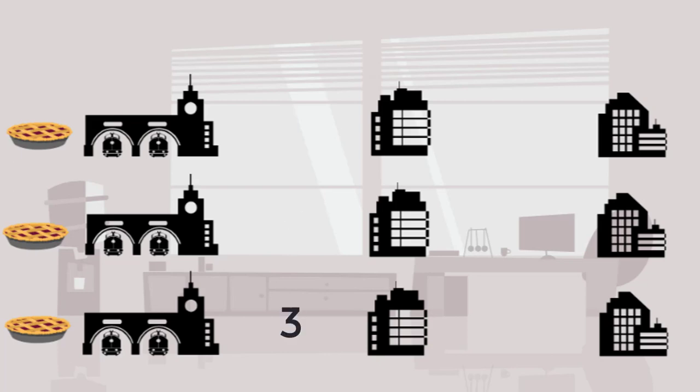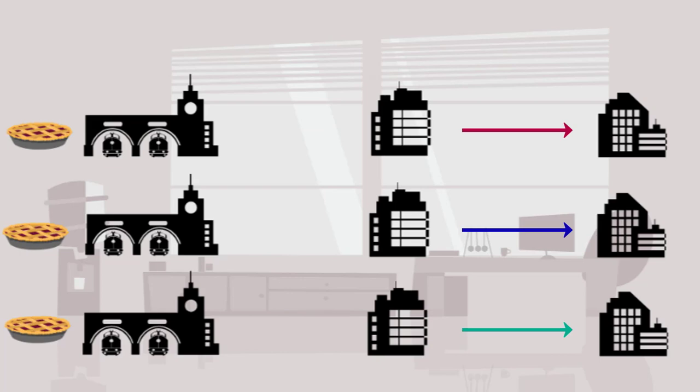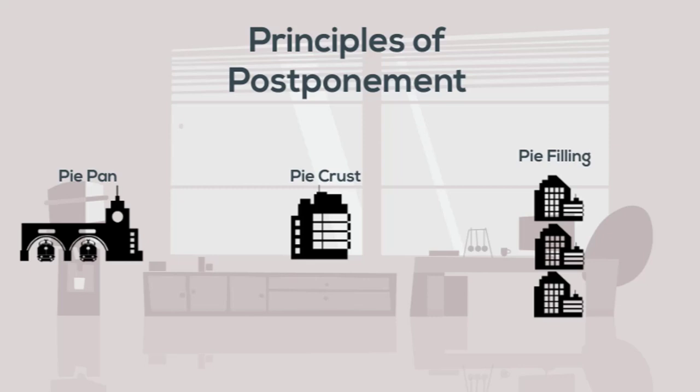As you can see, without designing extra variety into the supply chain, we basically end up with three separate legs of the supply chain, where each leg creates the pie pan and sends it to its own company to get pie filling put into it. Just by increasing the number of products, we've increased the complexity of the supply chain by a factor of three, because each element is only able to handle one type of product.